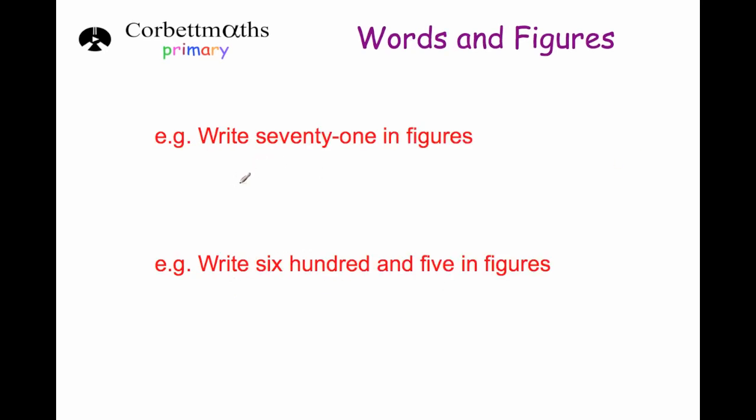Our next question says write the number seventy-one in figures. So seventy-one will have a seven in the tens column and a one in the units column. So seventy-one. Write six hundred and five in figures. So they will have a six in the hundreds column. It's got no tens, so zero. And it's got a five in the units column. So six hundred and five.